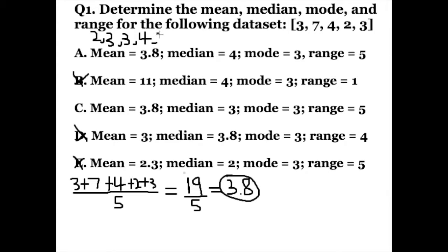If we reorder these from smallest to largest, we get two, three, three, four, seven. Now that we've ordered these from smallest to largest, we simply find the middle number. The middle number is three, and therefore our median is three. We see that corresponds with answer choice C, not answer choice A.